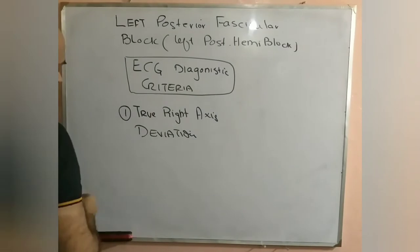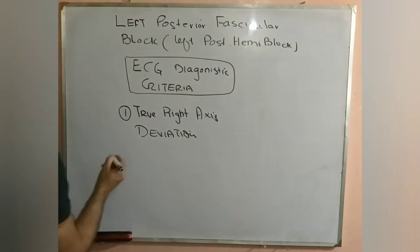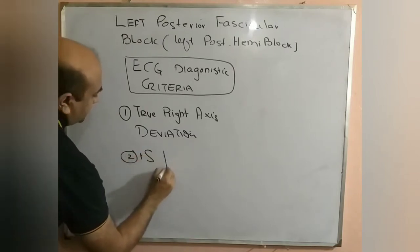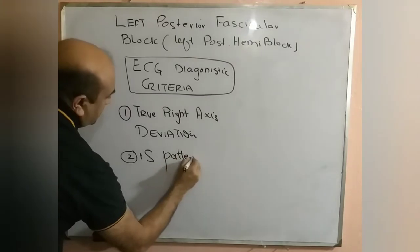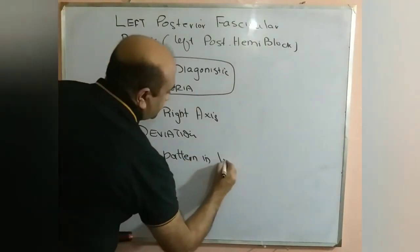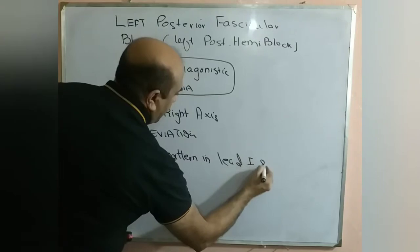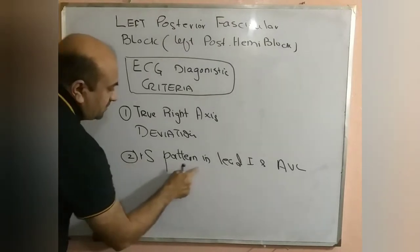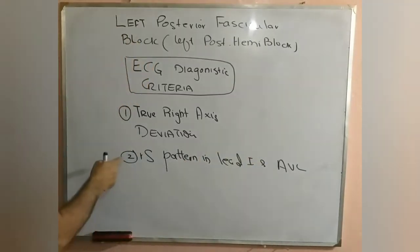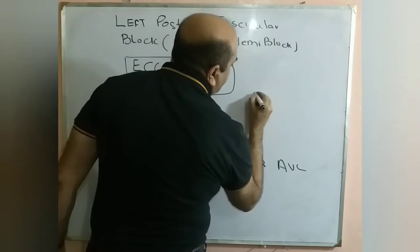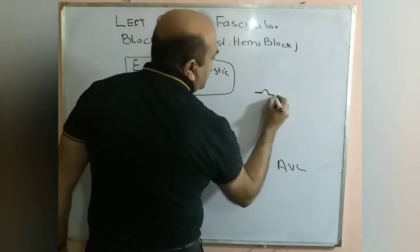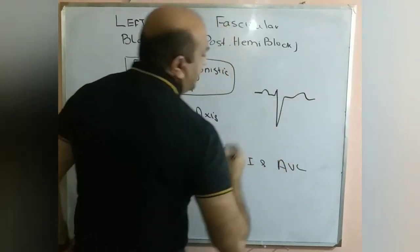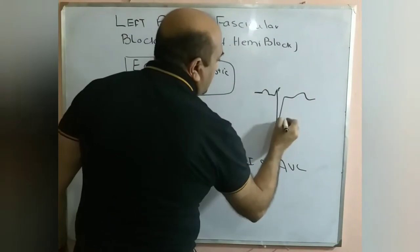Second, there should be an RS pattern in lead 1 and AVL — meaning there should be a small R wave (a small positive deflection) and a deep S wave (a deep downward or negative deflection) in lead 1 and AVL.